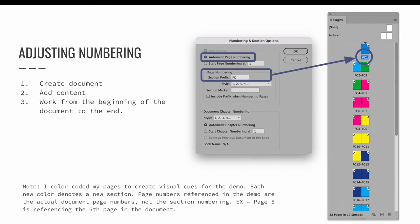If you look closely at my pages panel, all the pages are now labeled FC1, FC2, FC3, and so on, because I used the FC prefix to represent the front cover. This is only going to be applicable to pages one and two. I need to move on to section two to be able to set the settings for that section.